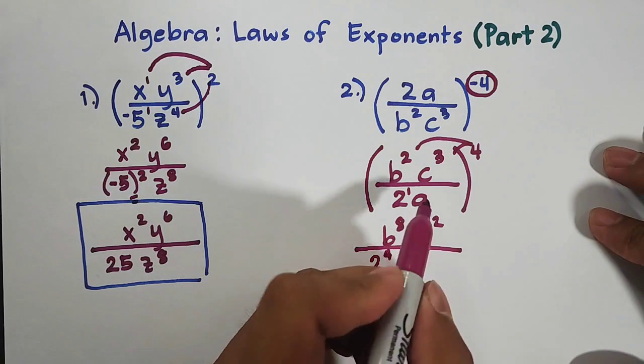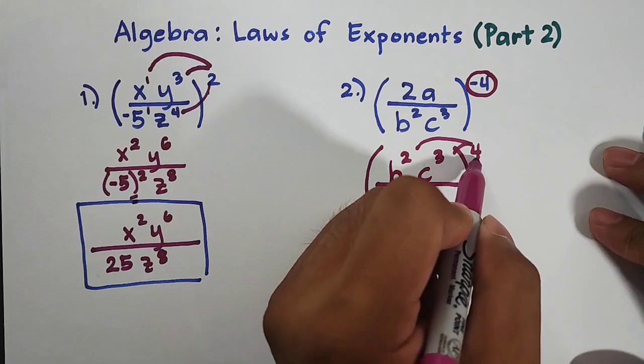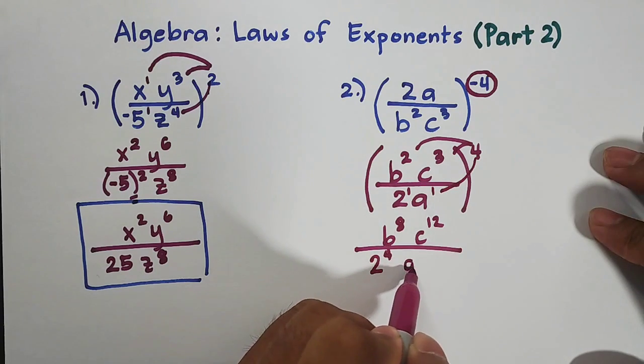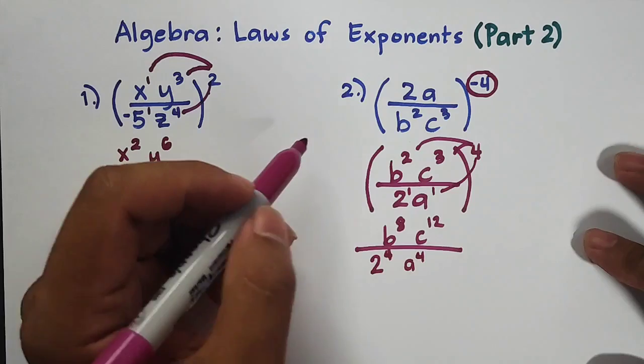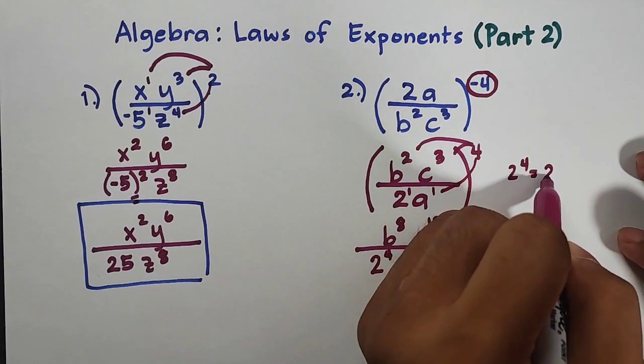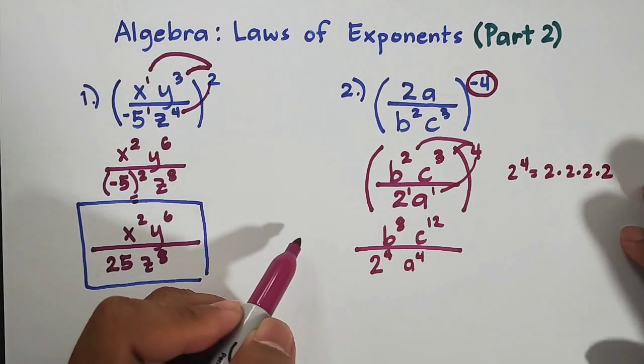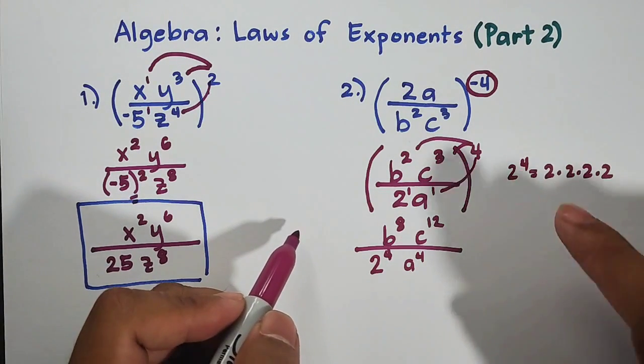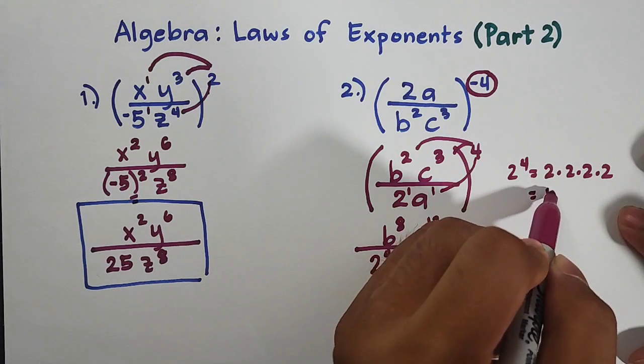For the variable a, it also has the exponent of 1. 1 times 4, that is a raised to 4. By the way guys, if you have 2 raised to 4, that is the same as 2 times 2 times 2 times 2. You need to multiply your base 2 four times. That's why 2 raised to 4 is equal to 16.